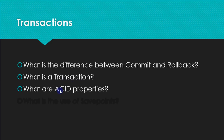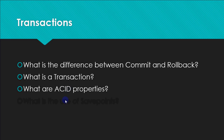ACID properties of transactions: Atomicity means one transaction is one unit — all its parts must execute completely, half execution is not possible. Consistency means you get the same correct result every time you execute the transaction. Isolation means when one transaction is using a table, no other transaction should use the same table simultaneously. Durability means code written once will execute reliably even after years.